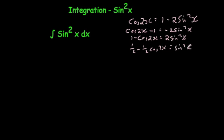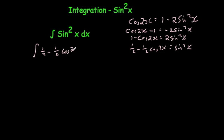So we know that sine squared x equals one half minus one half cos 2x. Let's replace that in our integral, so we're going to get the integral of one half minus one half cos 2x with respect to x.